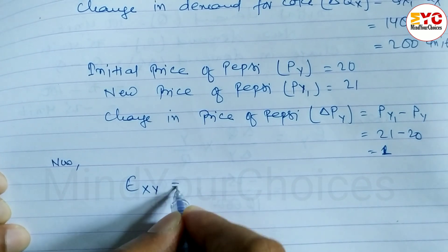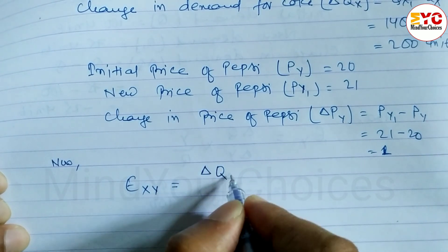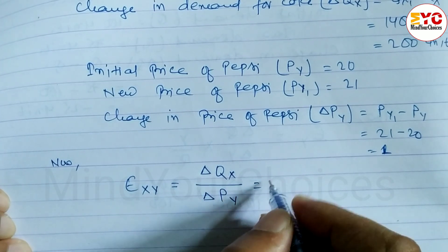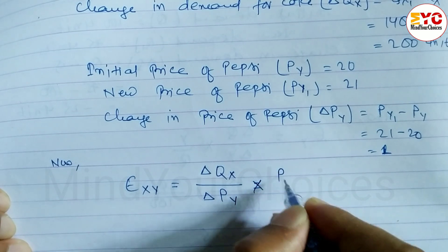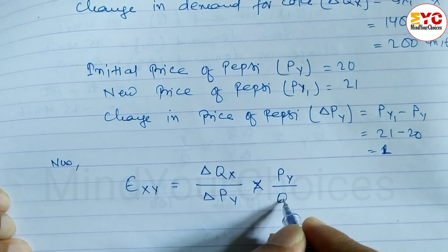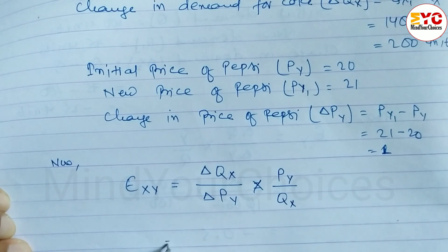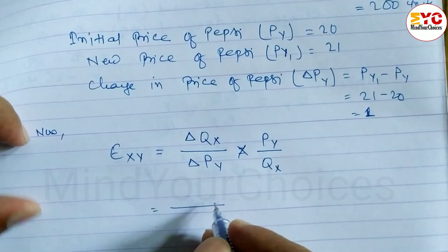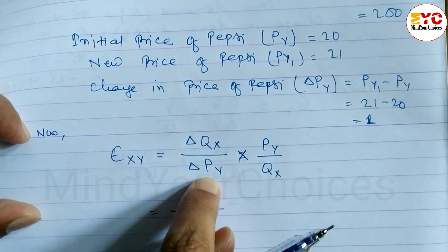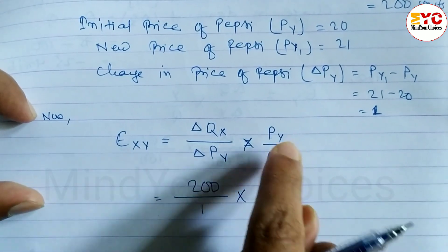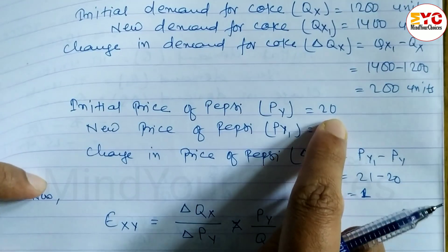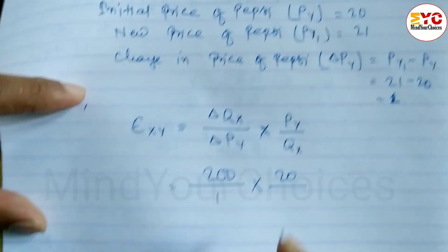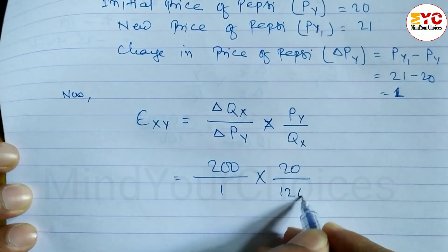The formula for cross elasticity of demand is: change in quantity divided by change in price, multiplied by initial price divided by initial quantity. So we write: 200 divided by 1, multiplied by 20 divided by 1200. This gives us the cross elasticity, denoted as E XY.